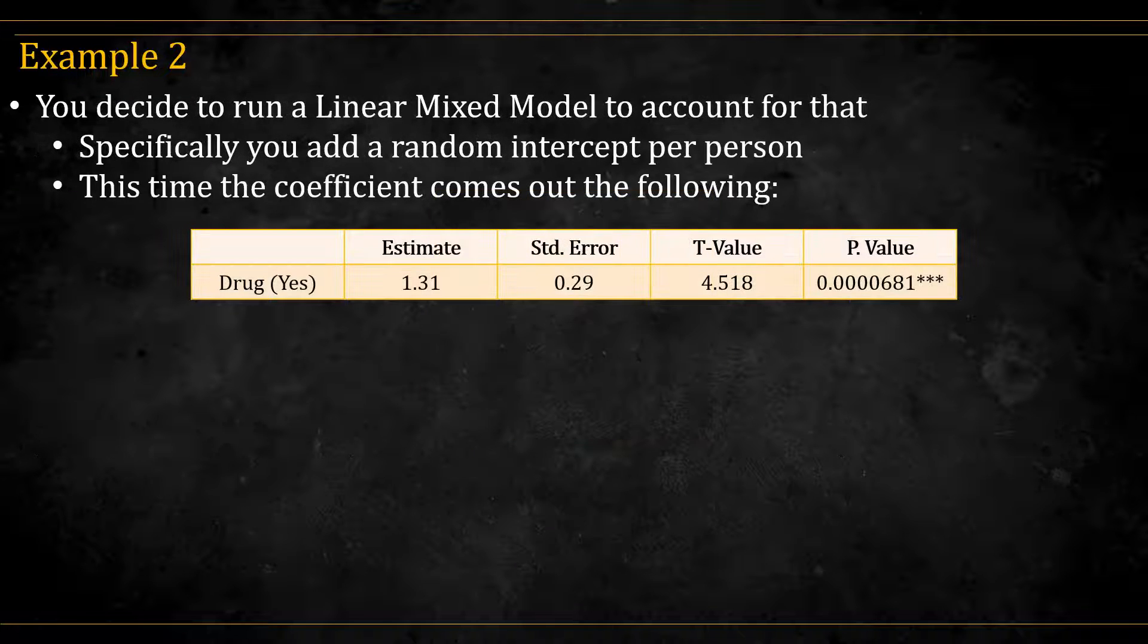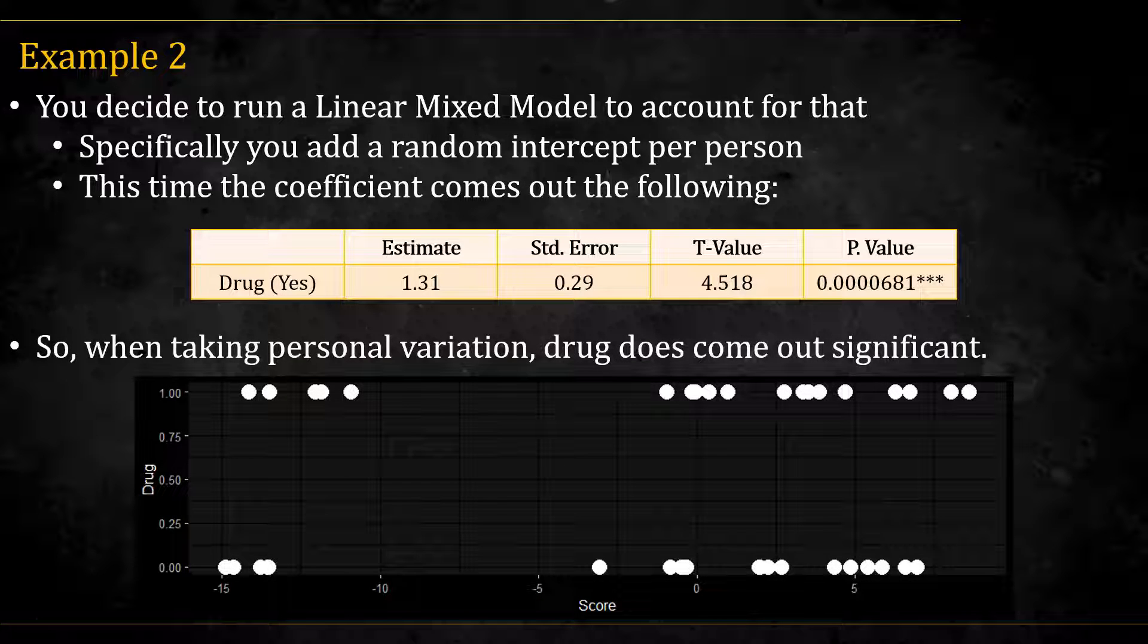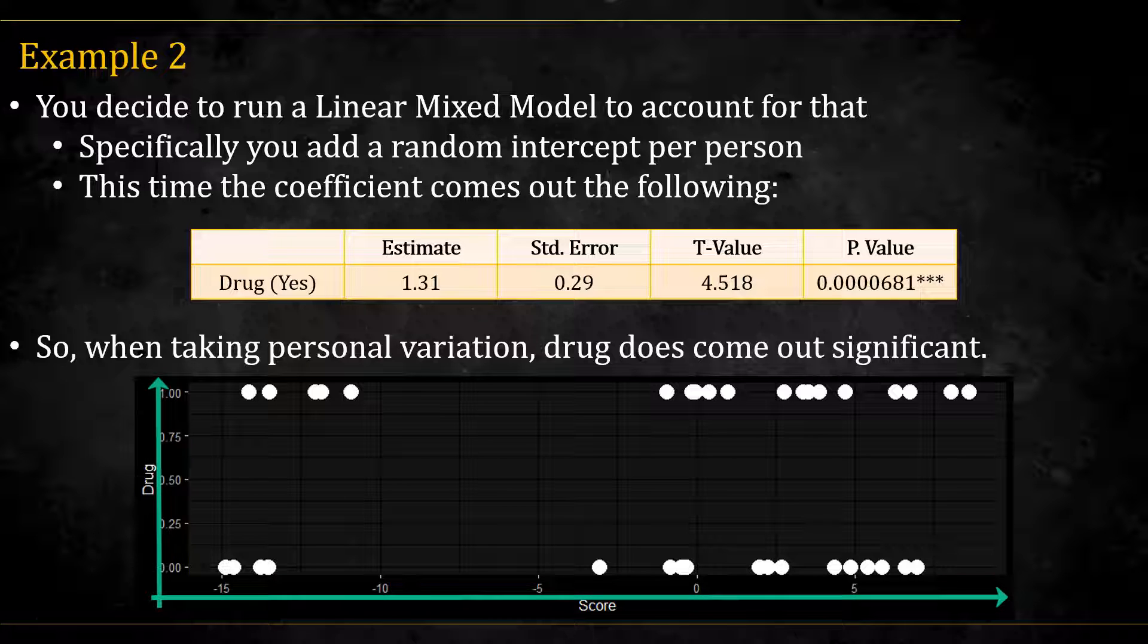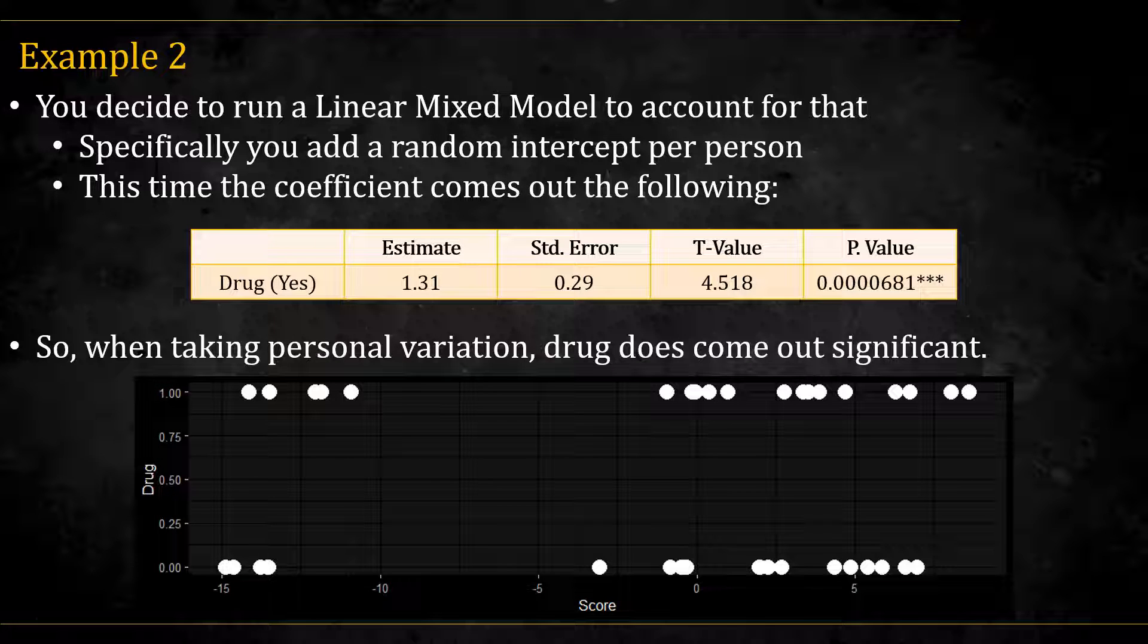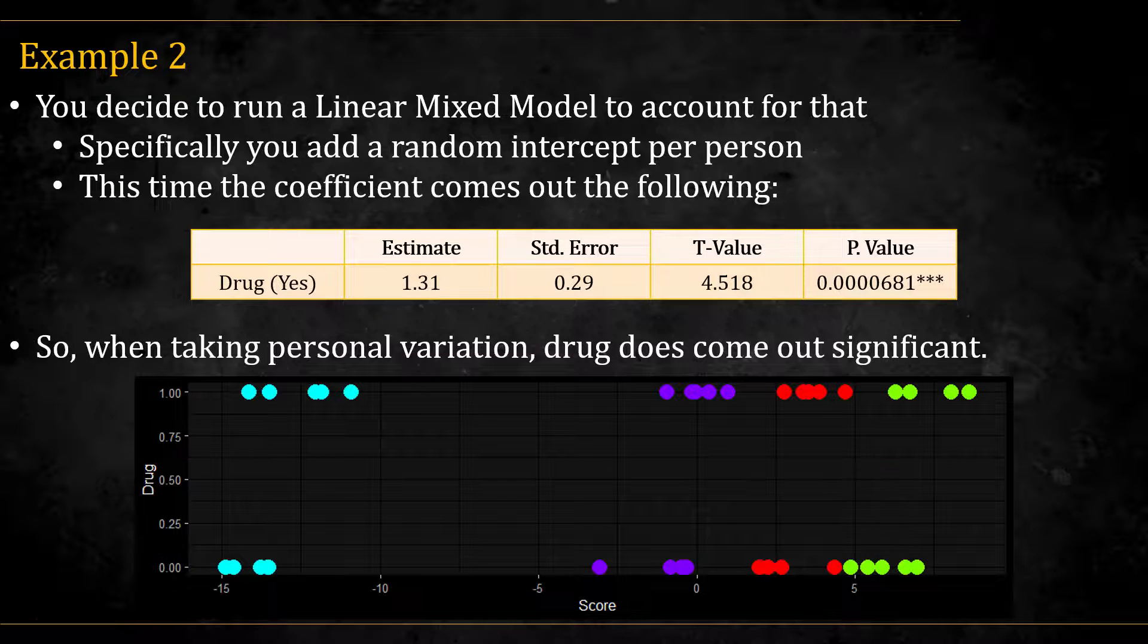When you run a mixed model with a random intercept, the coefficient comes out very significant. So, when taking the personal variation, the drug does come out to have a significant effect on the score. Here you can see the plot of the scores on the x-axis, and the drug on the y-axis. When looked all together, it doesn't seem the drug has any effect, but when we color the points according to each individual, we see that the effect of the drug becomes more visible, and we see that the general trend of the drug is to raise the score.